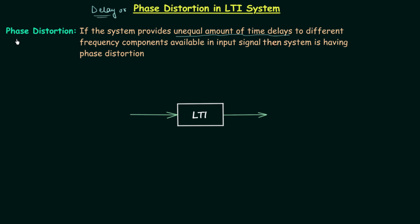So the definition of phase distortion is similar to the definition of magnitude distortion. There is one change and the change is unequal amount of time delays. In case of phase distortion we have unequal amount of time delays, and in case of magnitude distortion we have unequal amount of amplification. So let's quickly move to one example.